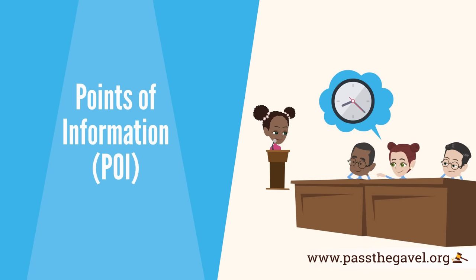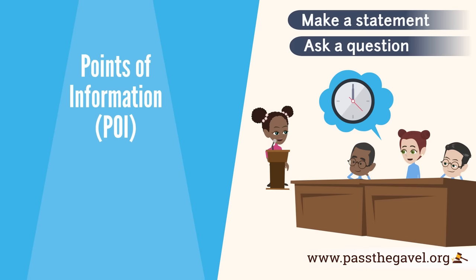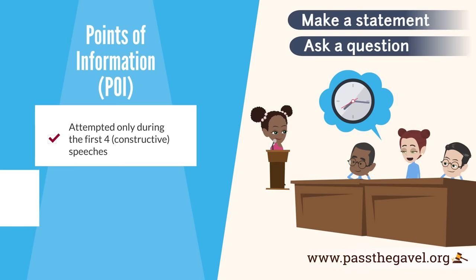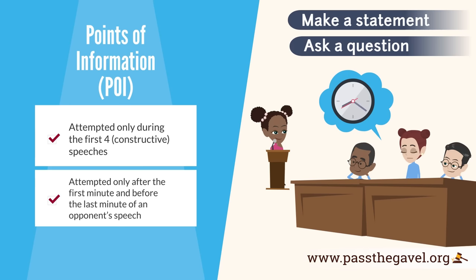There are two other important features of middle school parliamentary debate. The first is Points of Information, or POI. A POI is a request made by a member of the non-speaking team to the speaker to yield time to make a statement or ask a question. POIs may be attempted only during the first four constructive speeches of a debate.